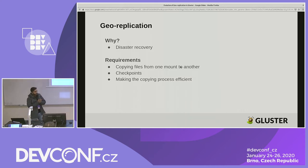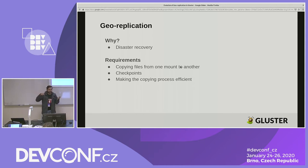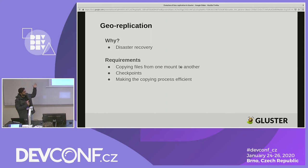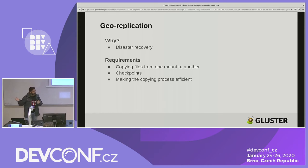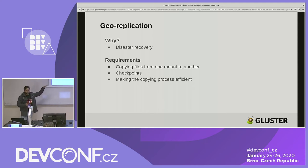About geo-replication: why do we use it? Basically it's for disaster recovery. With normal replication you can have data at a different place, but IOs are going to take a long time to sync between various places, so we go for geo-replication. The requirements from geo-replication are: copying files from one cluster to another, knowing until what point data has been copied — achieved through checkpoints — and making the copying process efficient.